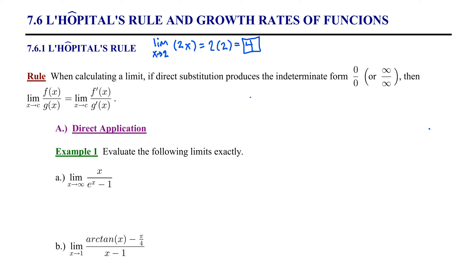In this section, we're going to learn what to do if after direct substitution we obtain something called an indeterminate form, which basically looks like 0 over 0 or infinity over infinity. Those two expressions are similar and related. Then we're going to calculate the limit in a special way, and this process will involve derivatives.